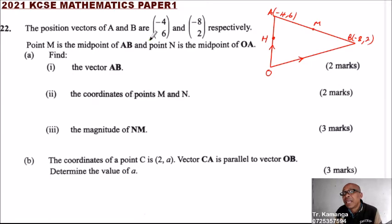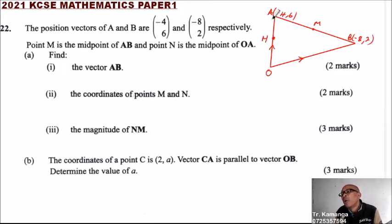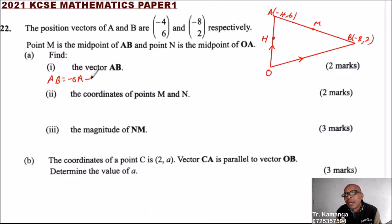To find vector AB, it is like moving from A to B using an alternative route. We move from A to O, then O to B. Instead of saying AO, we say minus OA, where minus represents that you are moving against the direction of the vector. So AB equals minus OA plus OB.